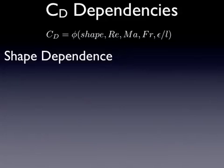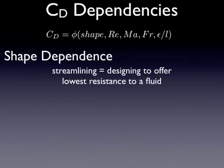Shape dependence is probably the greatest and has the biggest impact on the coefficient of drag. This is a huge topic and I'm just going to touch on it briefly. Let's start by talking about streamlining — when you design an object to offer the lowest resistance to a fluid.